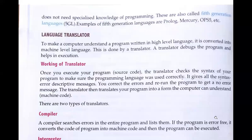A translator debugs the program and helps in execution. Debug means tracing out the error — finding the error. A translator can find errors in the program and can execute it. So to summarize: a translator converts our language into machine language, and it also debugs the program, meaning it finds errors in whatever code we are writing.